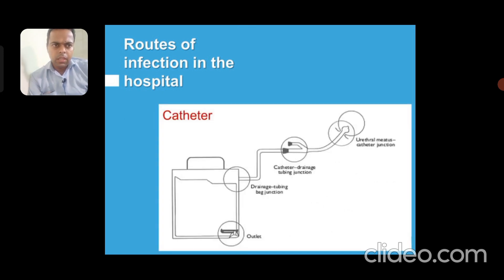Catheter is also another source for hospital acquired infection, in which catheter junction and catheter drainage, tubing junction, drainage tubing, bag junctions — there is an outlet for that as well.